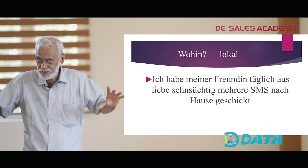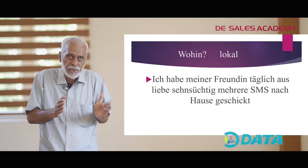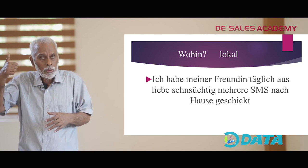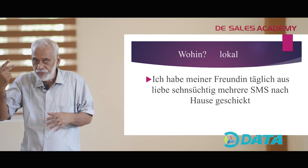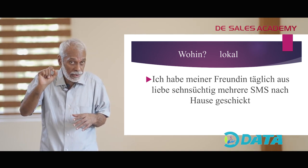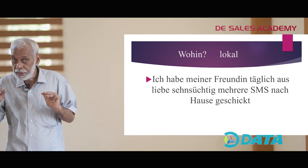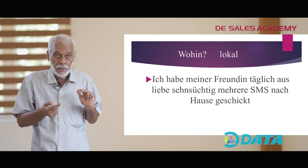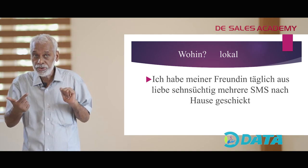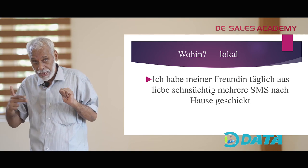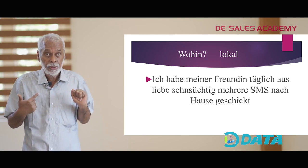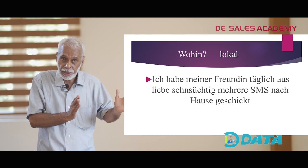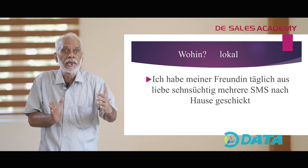Der vollständige Satz heißt: Ich habe meiner Freundin täglich aus Liebe sehnsüchtig mehrere SMS nach Hause geschickt. Das ist der vollständige Satz — alle Satzglieder sind drin. Now let us analyze this sentence: first comes the subject, then the finite verb, then Dativ, then täglich — temporal, then aus Liebe — kausal, then sehnsüchtig — modal, then mehrere SMS — Akkusativ, then nach Hause — lokal.